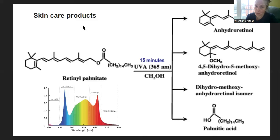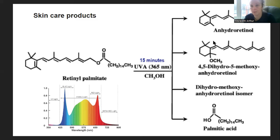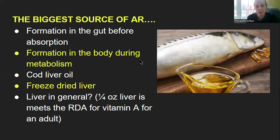UV light at 365 nanometers — even in our LED lights — for just 15 minutes on retinol palmitate with an alcohol present will produce anhydroretinol. I think the biggest source of anhydroretinol is formation in the gut before absorption. People drinking alcohol, with candida, or taking Saccharomyces boulardii supplements — which makes alcohol — will have alcohol and acid in the stomach. When you eat vitamin A food with alcohol and acid, you make anhydroretinol. My daughter's candida is so bad I believe every bit of vitamin A she consumes gets turned into anhydroretinol.